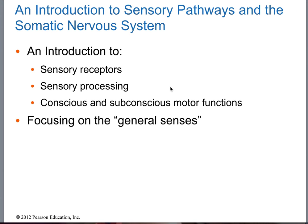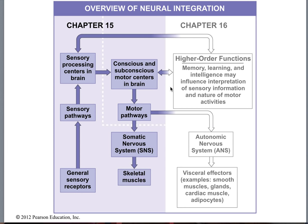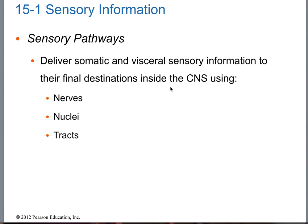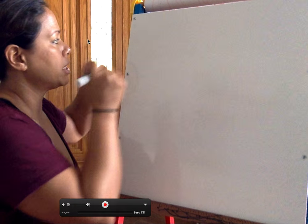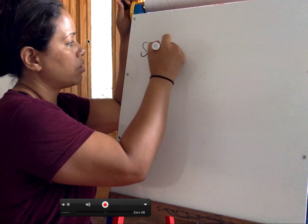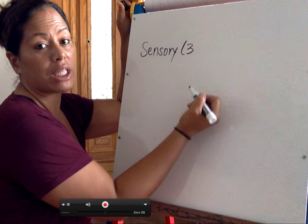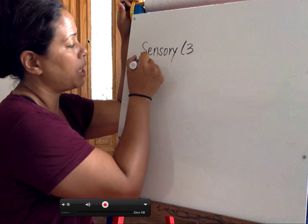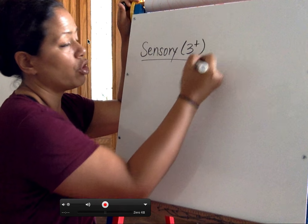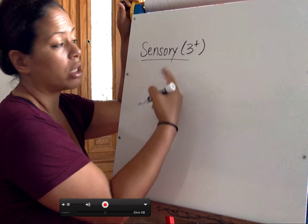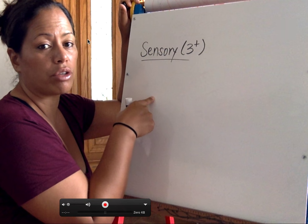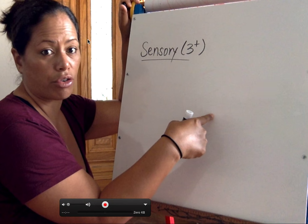What are some things that we want to know for these pathways? Well, sensory — what I want you guys to memorize is whenever you think of sensory pathways, it has three neurons in a row: first order neuron, second order neuron, third order neuron.